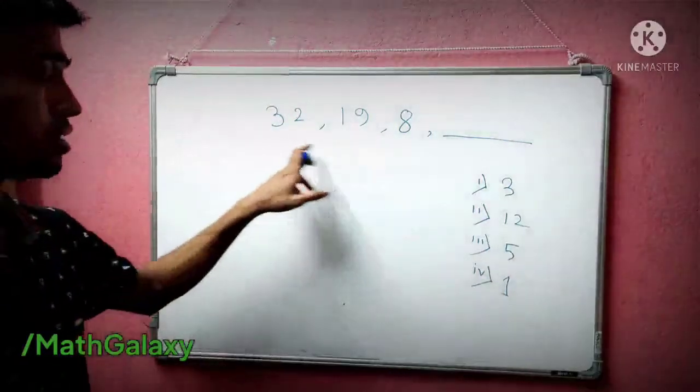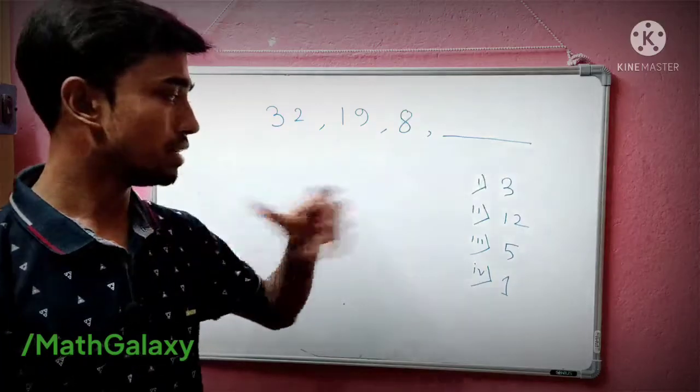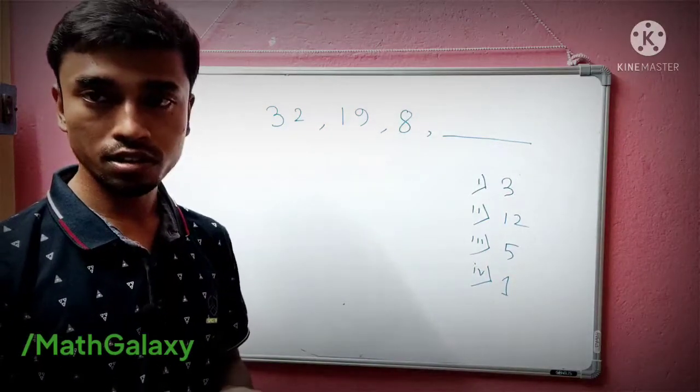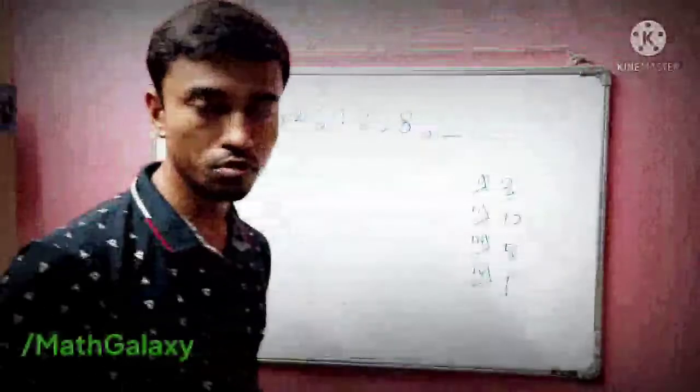This puzzle says that 32, 19, and 8, then what is there? There are four options: 3, 12, 5, 1. When you first see the puzzle, we do what we normally do.